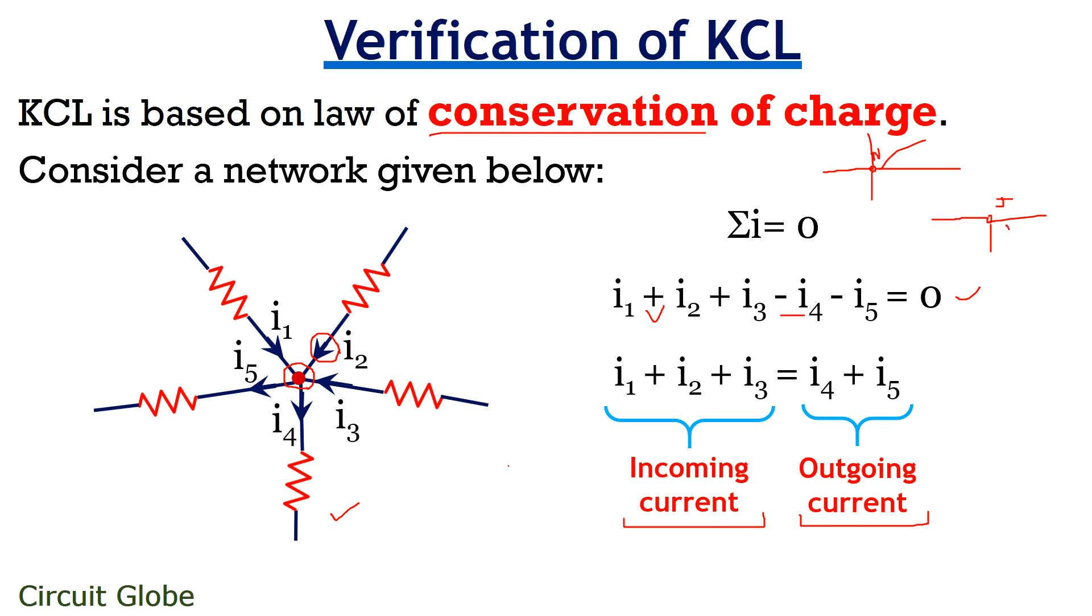But in case of a junction, it is necessary to have minimum three branches. Only in that particular condition, it will be called as a junction. Otherwise, it will be known as a node.